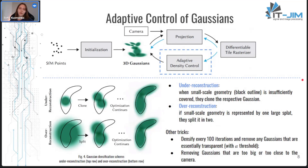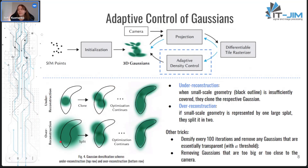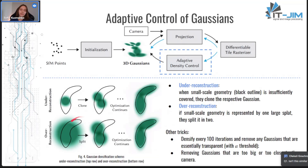Another crucial part that helps achieve detailed view synthesis is adaptive control of Gaussians. The number of Gaussians is not fixed — there is an optimization problem to address. While optimizing the shape and position of Gaussians, two cases may arise: under-reconstruction and over-reconstruction. Both cases produce large view-space positional gradients, which helps to identify them. For under-reconstruction, they clone Gaussians; for over-reconstructed regions, they split them. Very simple.